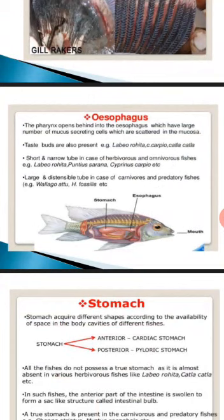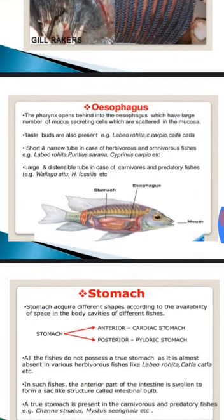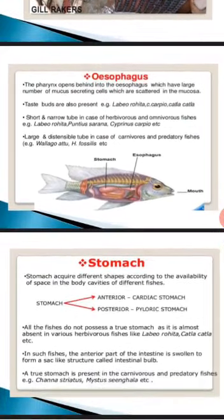The stomach acquires different shapes according to the availability of space in the body cavity of different fishes. The stomach is divided into an anterior part called the cardiac stomach and a posterior part called the pyloric stomach. Not all fishes possess a true stomach — it is absent in most herbivorous fishes like Labeo rohita and Catla catla. In such fishes the anterior part of the intestine is swollen to form a sac-like structure called the intestinal bulb. A true stomach is present in carnivorous and predatory fishes such as Channa striata and Mystus singhala.